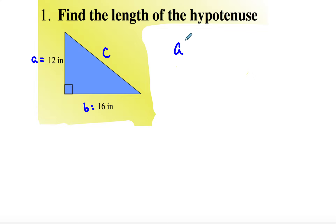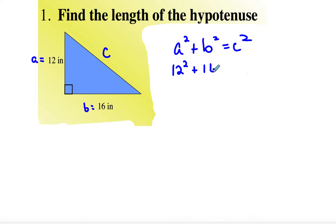We're going to have A squared plus B squared is equal to C squared. I'm going to take that 12 and plug it in, so I'm going to have 12 squared plus 16 squared is equal to C squared. Well, 12 squared is going to give me 144, and 16 squared is going to give me 256. If you add those together, you're going to get 400.